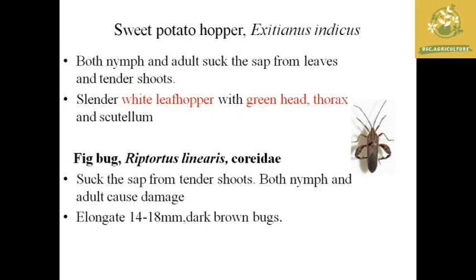The next pest is the sweet potato leafhopper, with scientific name Exitianus indicus, which is of Indian origin, hence the name indicus. Both nymph and adult suck sap from the leaves and tender shoots. It is a slender white leafhopper with a green head and thorax, causing skeletonization of leaves.